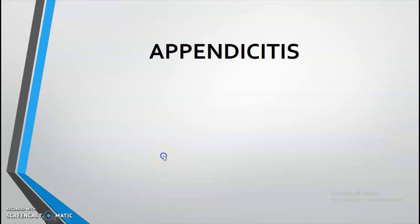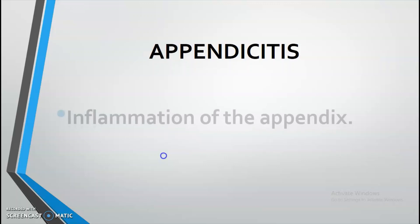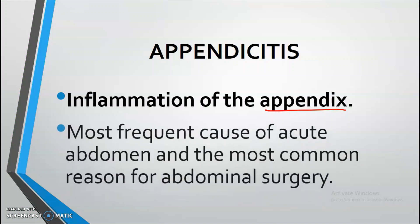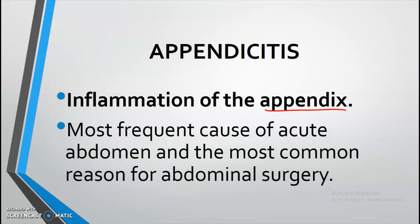According to the book of Brunner and Suddarth, appendicitis is a condition of inflammation of the appendix. In nursing, the appendix is actually an accessory organ in the gastrointestinal system, located at the initial part of the colon, or the initial part of the ascending colon. Appendicitis is the most common cause of acute abdomen, especially in the United States, and the most common reason people undergo abdominal surgery.